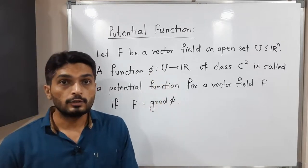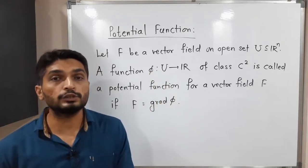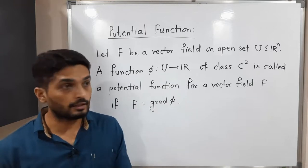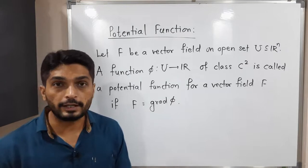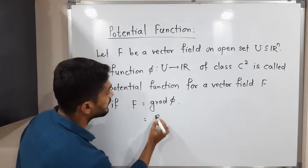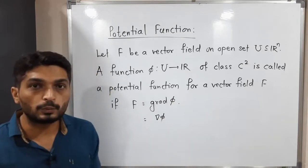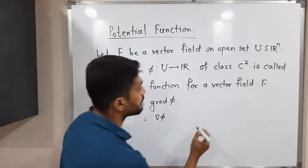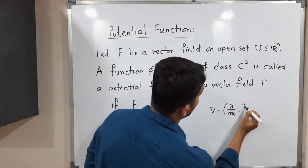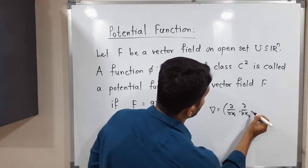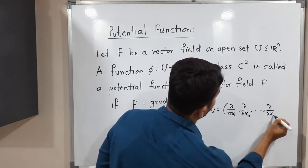Phi is said to be potential function of a vector field F if F is equal to gradient of phi. What is the meaning of gradient of phi? That is nothing but del phi. I hope all of you are familiar with this symbol del which is defined in this way: del equals ∂/∂x₁, ∂/∂x₂, and so on, ∂/∂xₙ.